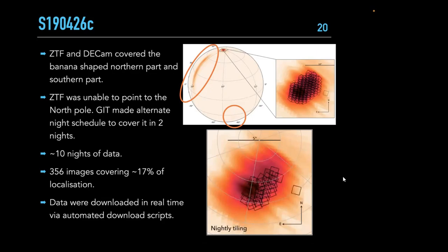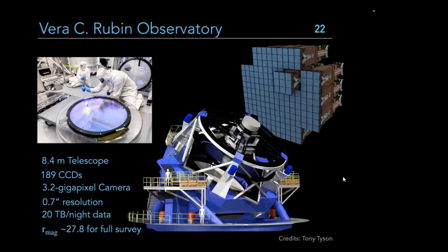Following this tradition, the next big thing coming in a couple of years is the Rubin Observatory — formerly LSST. This is an 8-meter class telescope operating in survey mode with a massive camera made of 189 CCDs, giving a field of view of about 3.5 degrees. It will produce roughly 20 terabytes of data per night — a next-level big data challenge.